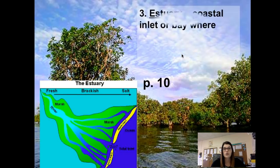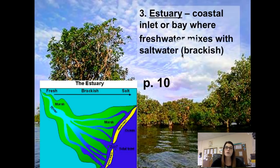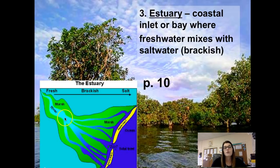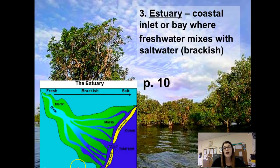The next type of habitat in the intertidal zone is an estuary. An estuary is a coastal inlet or bay where fresh water mixes with salt water. You'll see this picture on page 10 in your lab notebook with questions to answer. A river brings fresh water — no salt — and where that meets the ocean's salt water is where we find estuaries. The mixed area that is roughly half fresh water and half salt water is called brackish water — you'll need to remember that term.